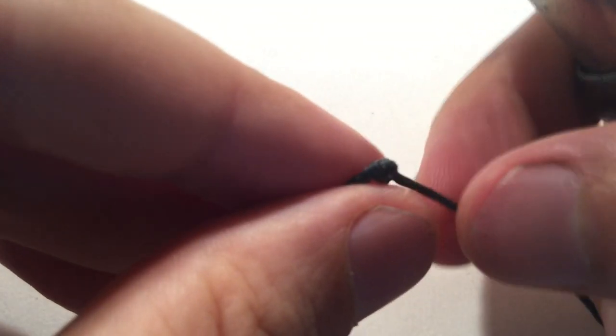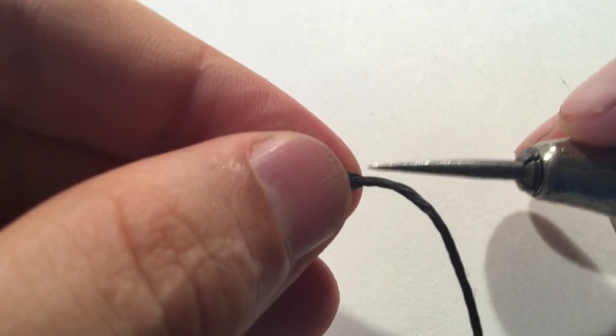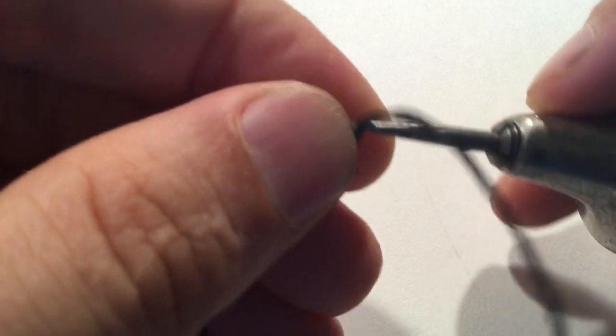You want to come at it from a different angle and then try and find the opposite loop as well on the backside, and just make sure that you get in there.